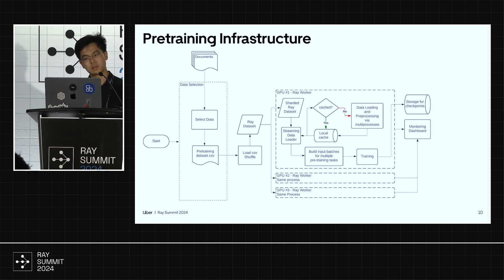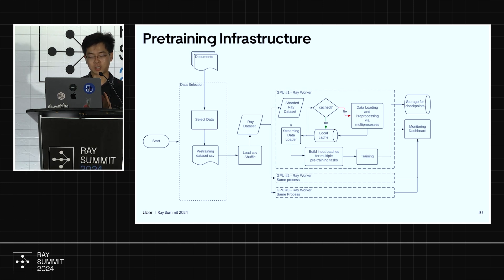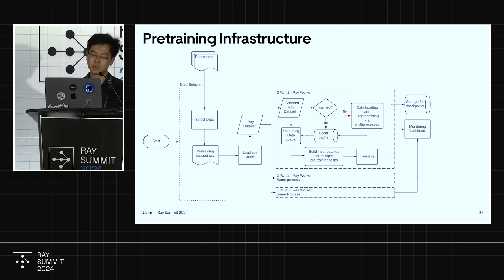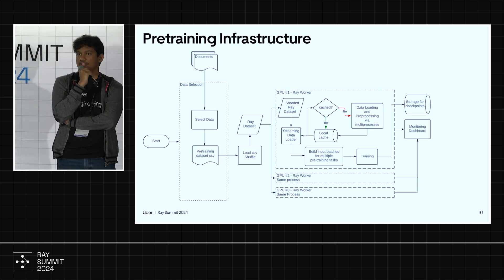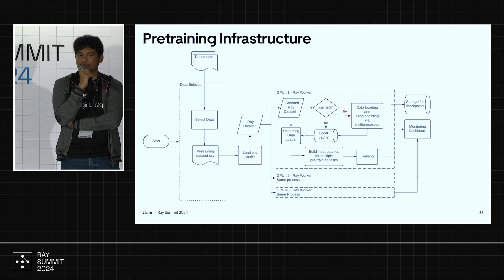Q: How do you handle edge cases like crumpled receipts or unclear driver's licenses? A: Our image quality model helps detect these cases and gives feedback to users — for example, instructing them to adjust their angle or lighting. In both training and serving we have techniques to sample the right data and prevent poor-quality inputs from affecting model performance. The quality model is calibrated based on a golden dataset with a defined threshold before prompting users to retake a photo.